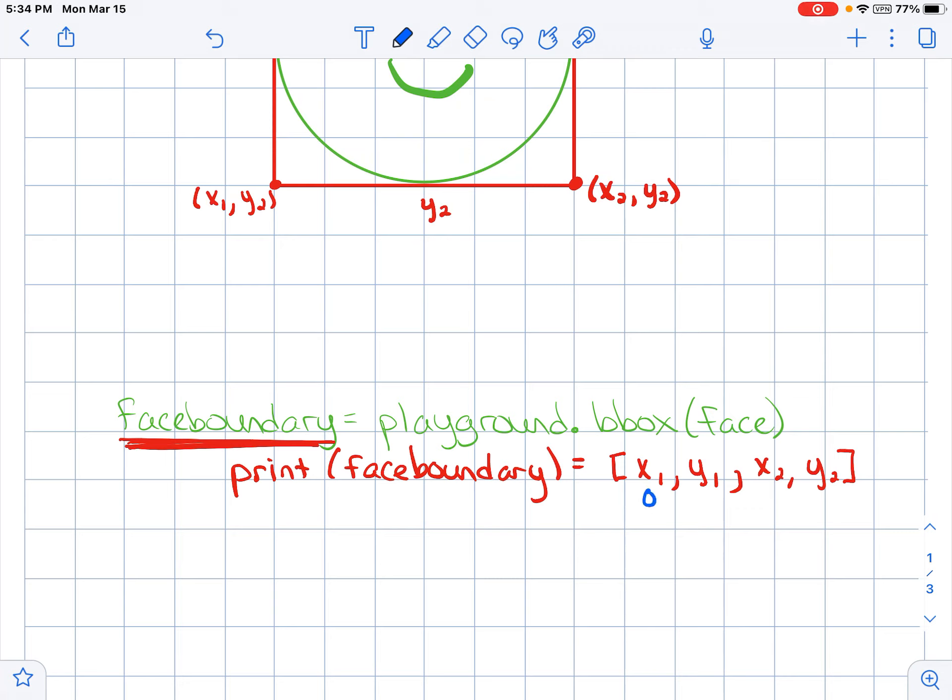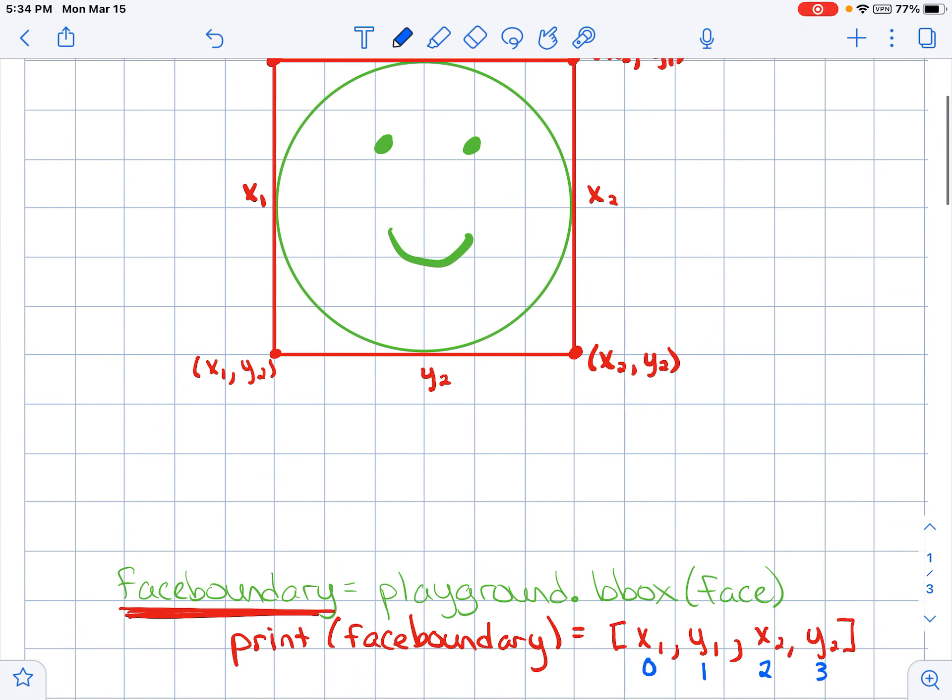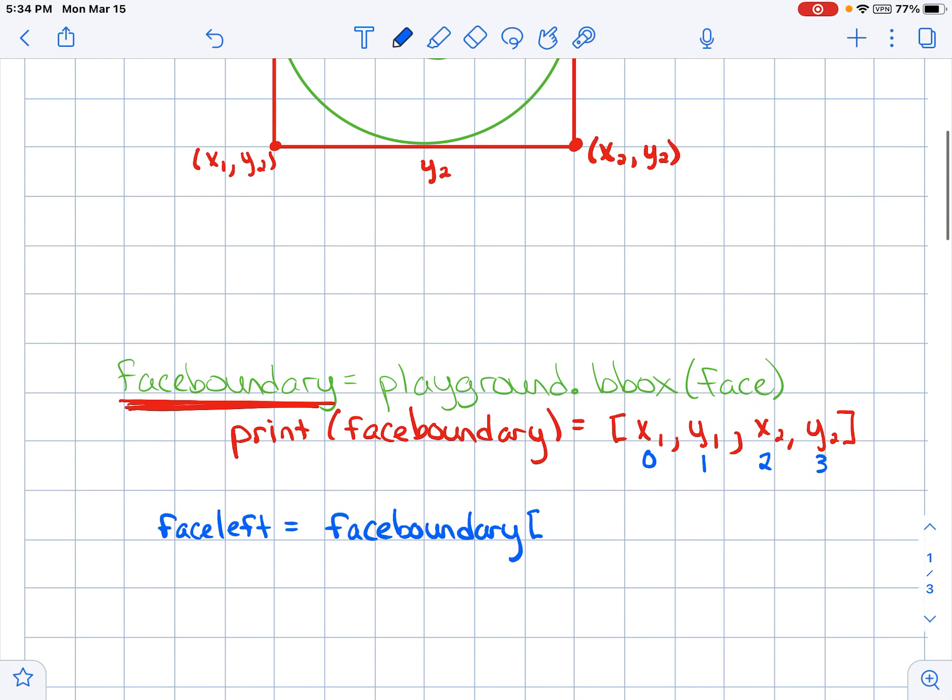This part is important. Remember we've talked about the index of a list. This is index 0, index 1, index 2, and index 3. If I'm trying to figure out where is the left side of this face, I would say face left equals face boundary, and then I would give the index number of the left side of the face. The left side of the face is x1, x1 is in index 0. Face right is the face boundary, we're going to go inside of this list and say which index is the right side of the face. The right side is x2, and x2 is in the second index.